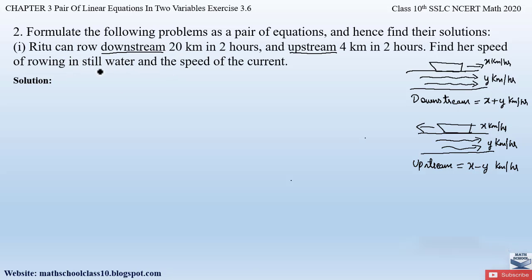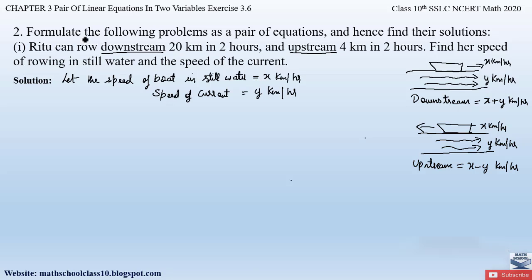Since we have to find the speed of rowing in still water and the speed of the current, let us assume them to be x and y respectively. Let the speed of the boat in still water be x kilometers per hour and speed of the current be y kilometers per hour. The first condition is: Ritu rows downstream 20 kilometers in two hours, so the speed downstream is x plus y km/h.